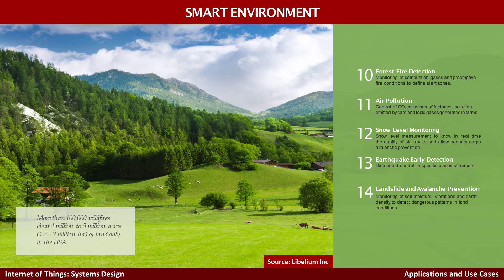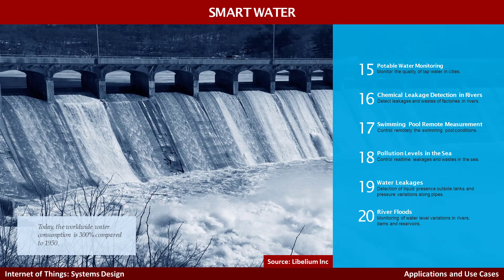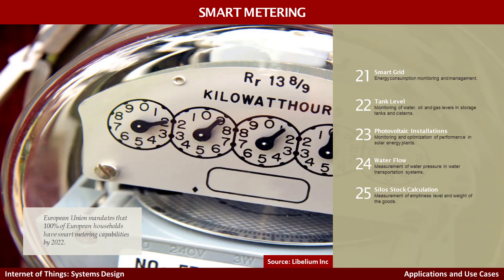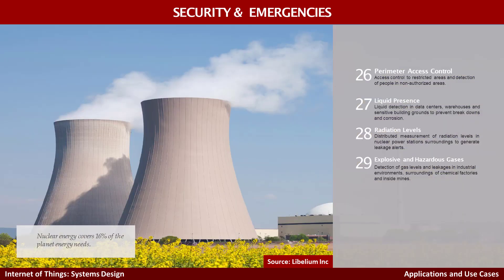Next, I want to introduce the smart environment domain. There are many important applications for environmental protection and monitoring. Smart water is of significant importance — monitoring different water sources for drinking water quality or avoiding water pollution in oceans and rivers. Then there is the smart metering domain where we monitor the smart grid and related applications. We also have security and emergency applications, such as monitoring radiation levels in nuclear power plants.